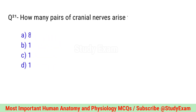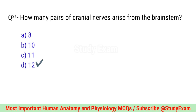Question number twenty-one. How many pairs of cranial nerves arise from the brain stem? Correct option is D. 12.